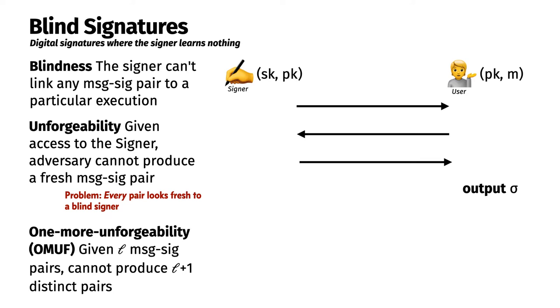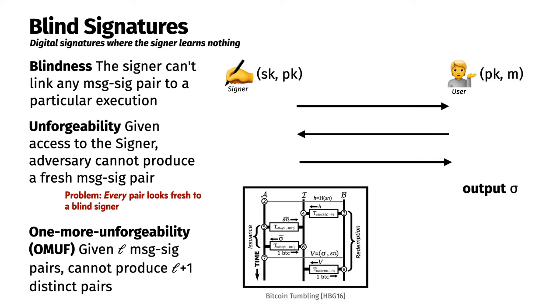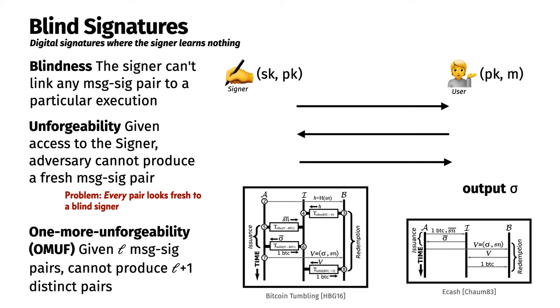To provide motivation, we note that there are real-world applications for blind signature schemes. They have appeared as a primitive for an anonymous fair exchange mechanism for Bitcoin, as well as for a cryptocurrency imagined by David Chaum called eCash, which is actually the origin of the idea of blind signatures.